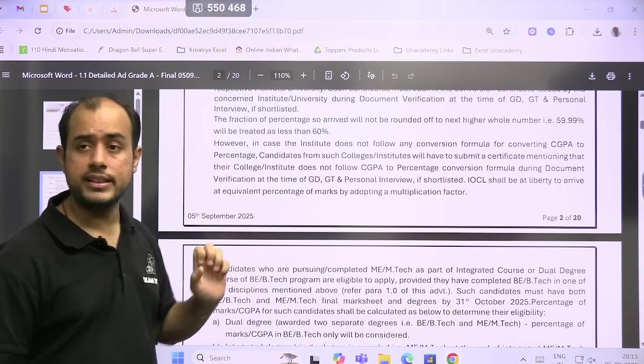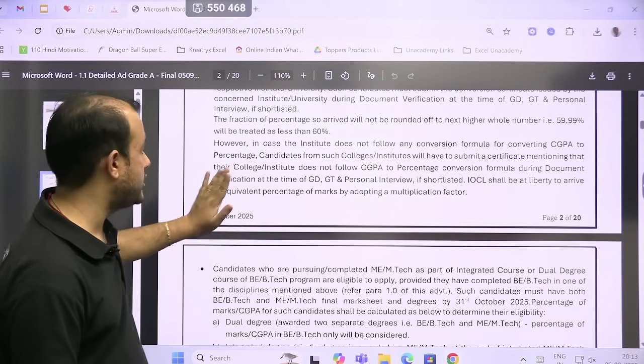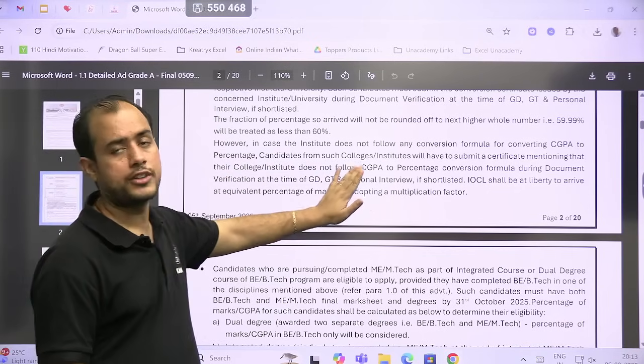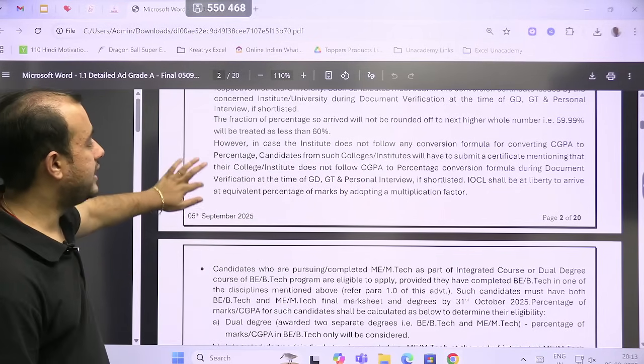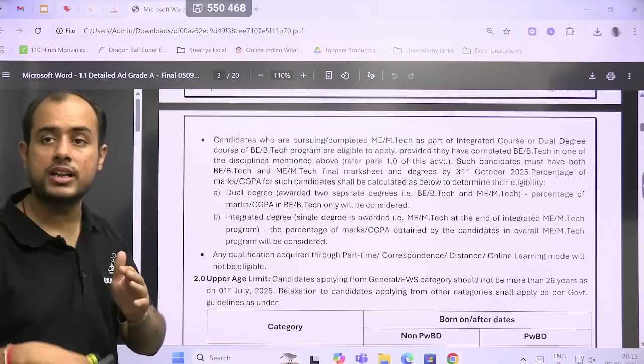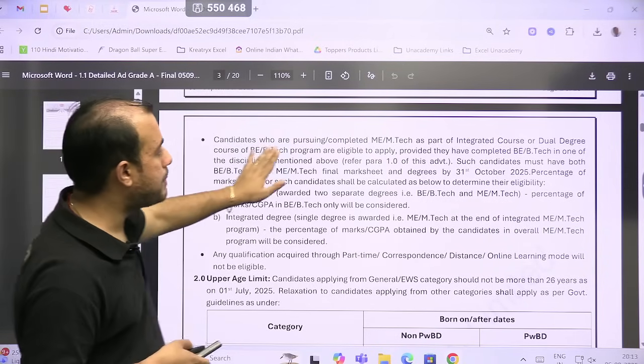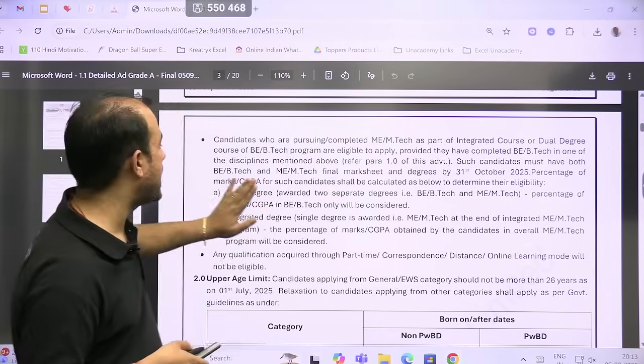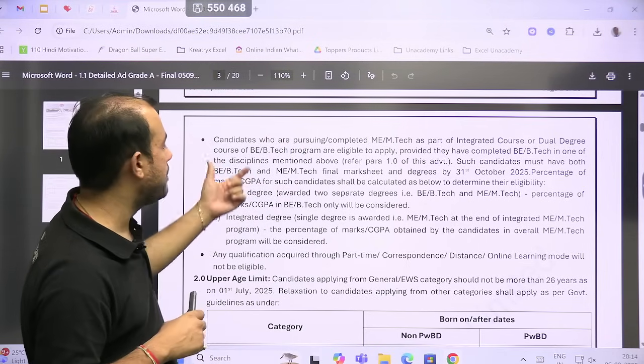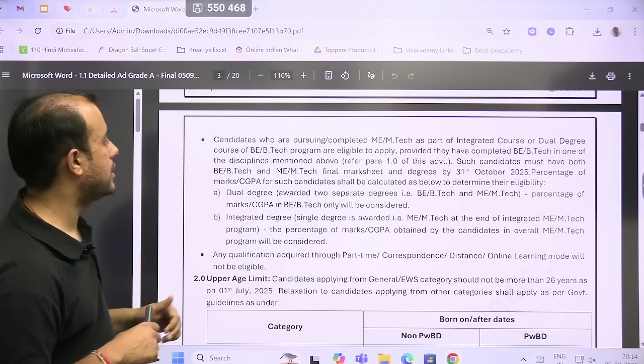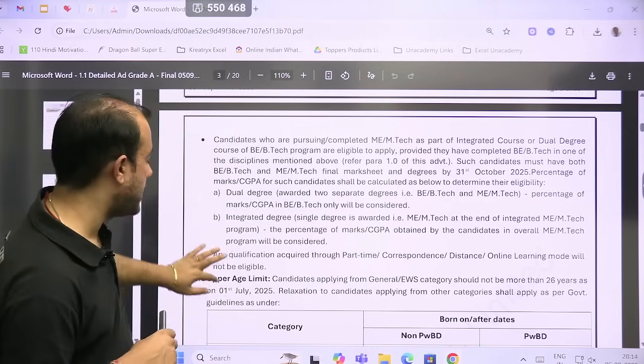So basically, when you are getting a CGPA, then your university should issue a certificate which tells us how to convert that CGPA into percentage. And if your percentage comes above the minimum criteria, then only you can join. Even 59.99 will not be considered as 60 percent. And your document verification, GD, GT, PI—these are the rounds. The standard recruitment process, even during the GATE time, this was the process. Now, those who are pursuing ME, MTech as a part of integrated or dual degree are eligible to apply, provided they have completed the BTech already and they will get the mark sheet of MTech by 31st October 2025.